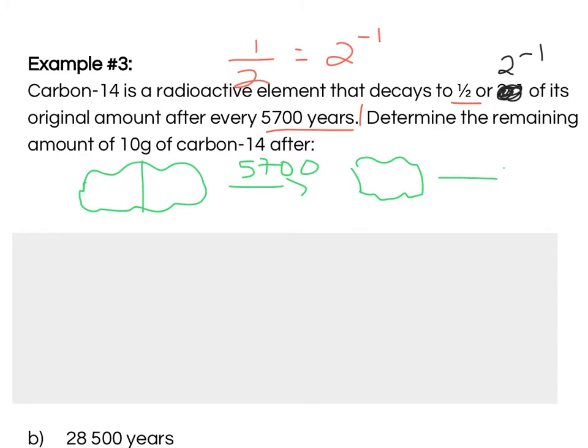So, every time 5,700 years passes the quantity, the original amount of what I had decreases by a factor of one-half. That's actually what we call half-life, the half-life for an element.